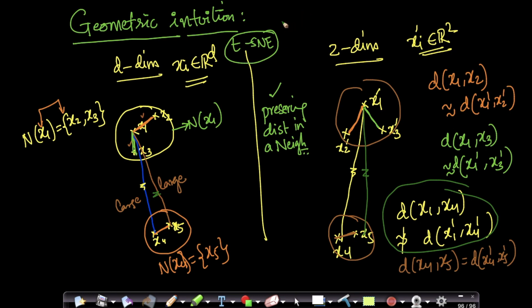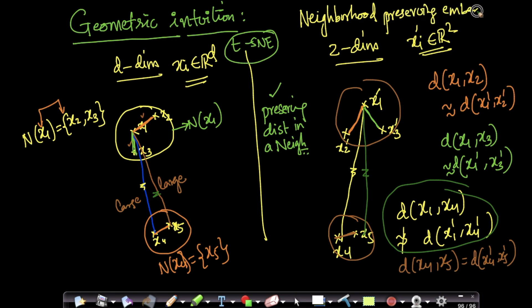t-SNE in a nutshell: if I have to summarize it in one sentence, it is basically a neighborhood-preserving embedding. It tries to preserve the distances within a neighborhood. For distances outside the neighborhood, it doesn't make any promise — it will try if it can, but it doesn't guarantee anything.